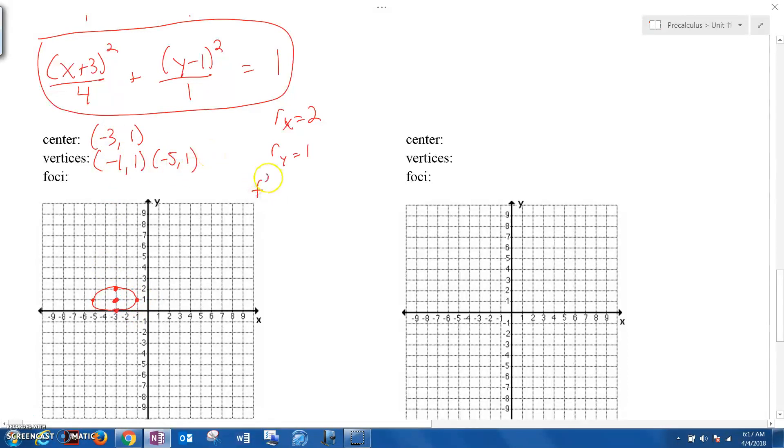The focal radius, or where the foci are, the focal distance away from the center, is 2² minus 1², or 3, the square root of 3. And again, we're moving in the x direction. So that means that we're going to be adding that to the x-coordinate. So the x-coordinate of the center is -3, and then it's plus or minus root 3, comma, the y-coordinate is 1.